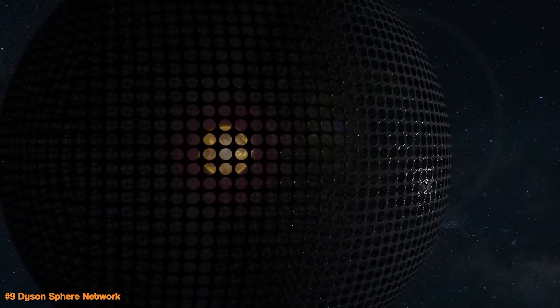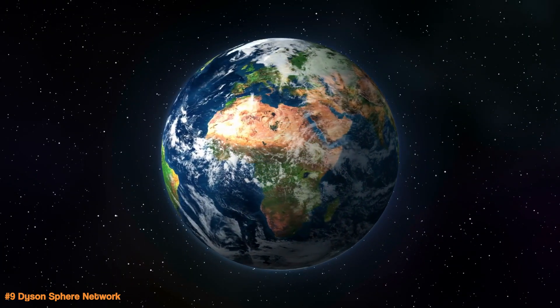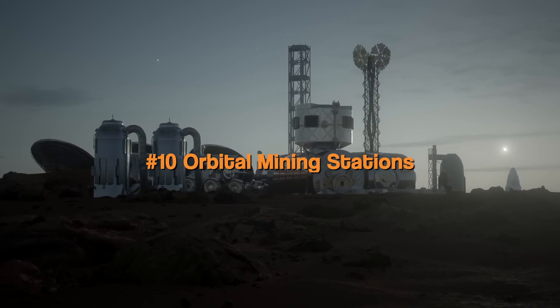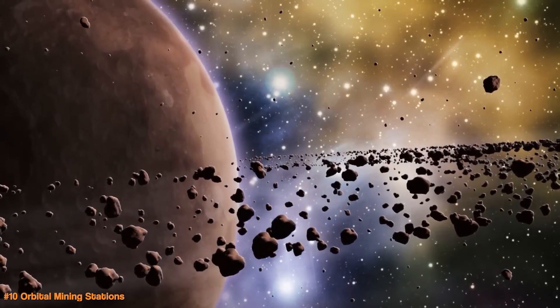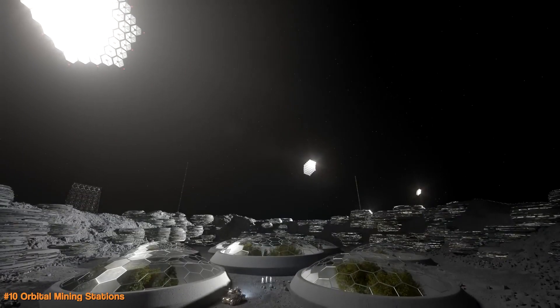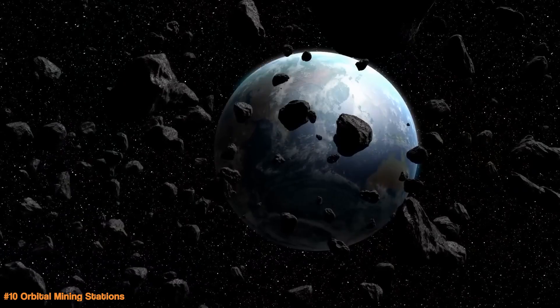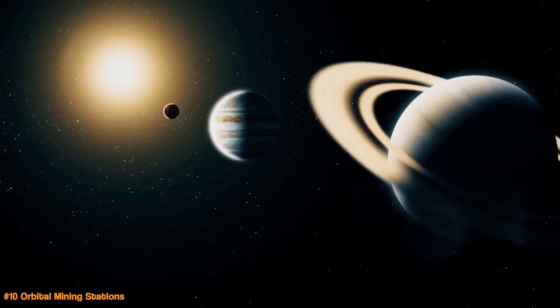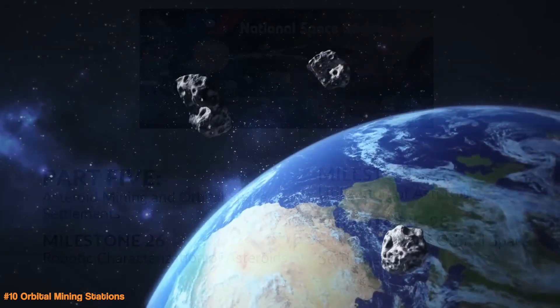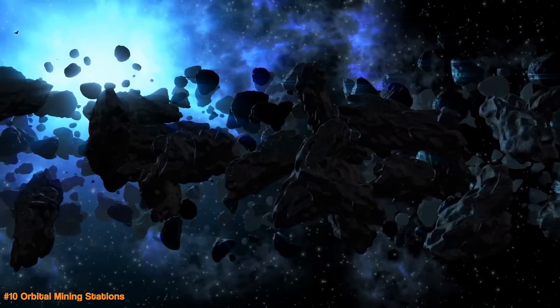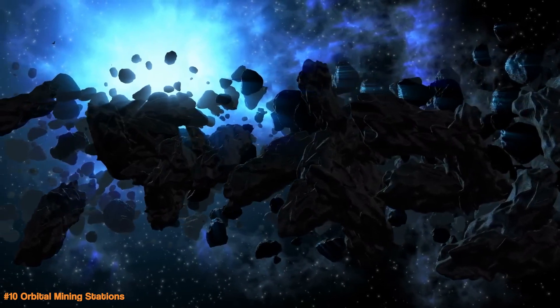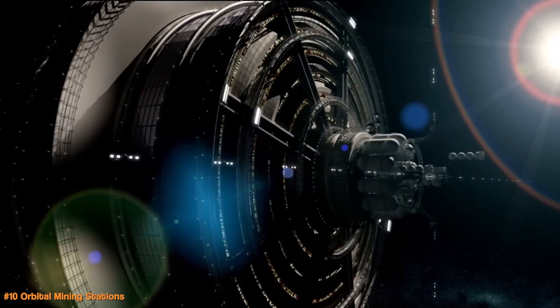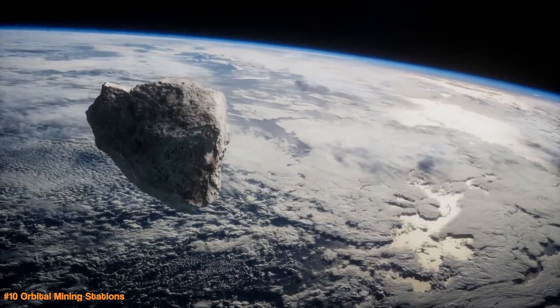But to build all of these megastructures, we couldn't use the resources on Earth. We would need to build orbital mining stations. An orbital mining station is a facility in space that collects resources from asteroids, moons, or planets. These stations are set up in orbit around a celestial body where they mine things like metals, water, and rare elements. The mined materials are either processed and stored or sent back to Earth or other space habitats. Orbital mining is important for space exploration because it helps provide materials needed for building, fuel, or research without relying on resources from Earth. It's an idea that could make future space missions easier by getting what we need right from space itself.